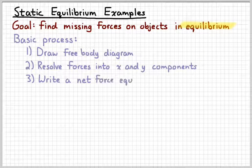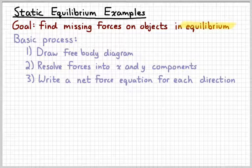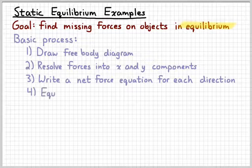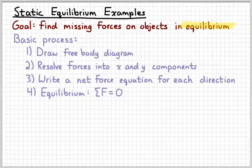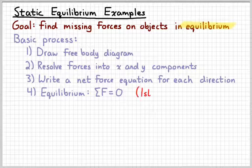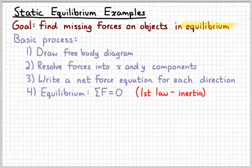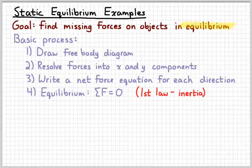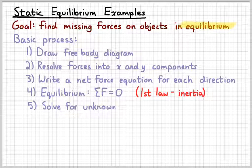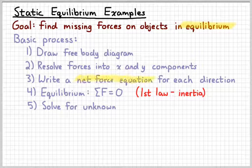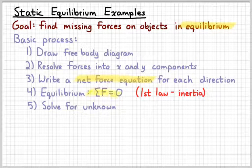The third thing is we're going to write a net force equation for each direction. So one for the x, one for the y. The fourth thing we're going to do is set that net force equation equal to zero. Remember that objects in equilibrium, the forces on them are balanced, so the sum, vector sum, has to be zero. That's a consequence of our first law of motion, or you may refer to that as the law of inertia. And then once we have those net force equations, we can solve for the thing that we're missing. So our free body diagram and resolving those forces into components will help us write our net force equation, set it equal to zero, and then that's the equation that we use to solve for the thing we're missing.